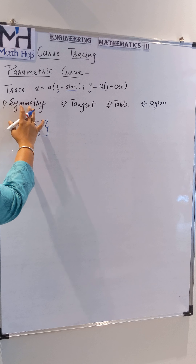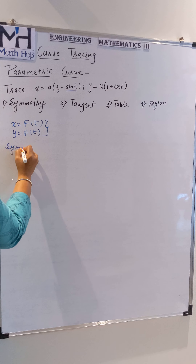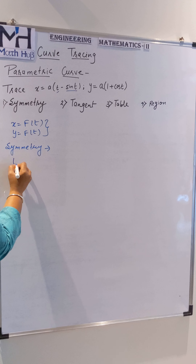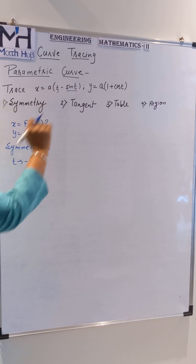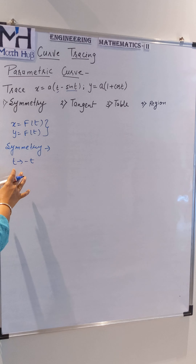When we are finding symmetry, the rule we have to apply is: change T by minus T in the given equation. If you are watching this video for the first time, we have a video on the basics of parametric curves — go through that video so you will understand how and why we apply this kind of symmetry.